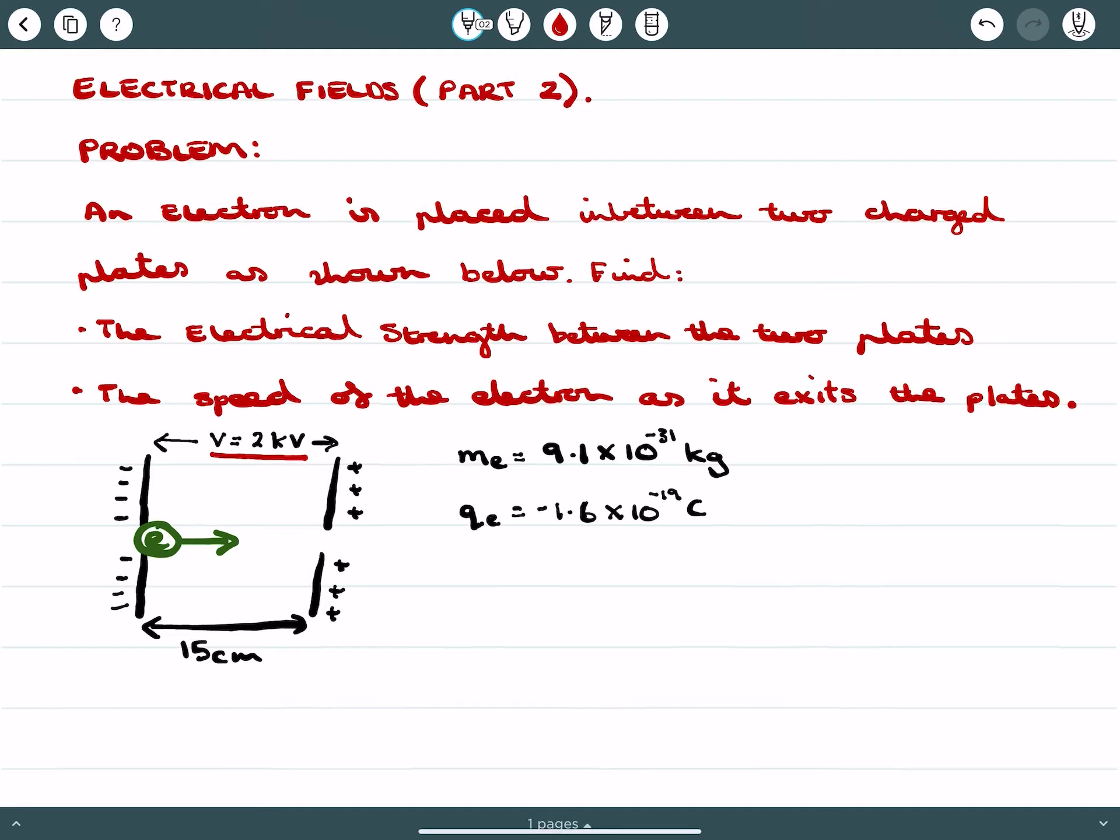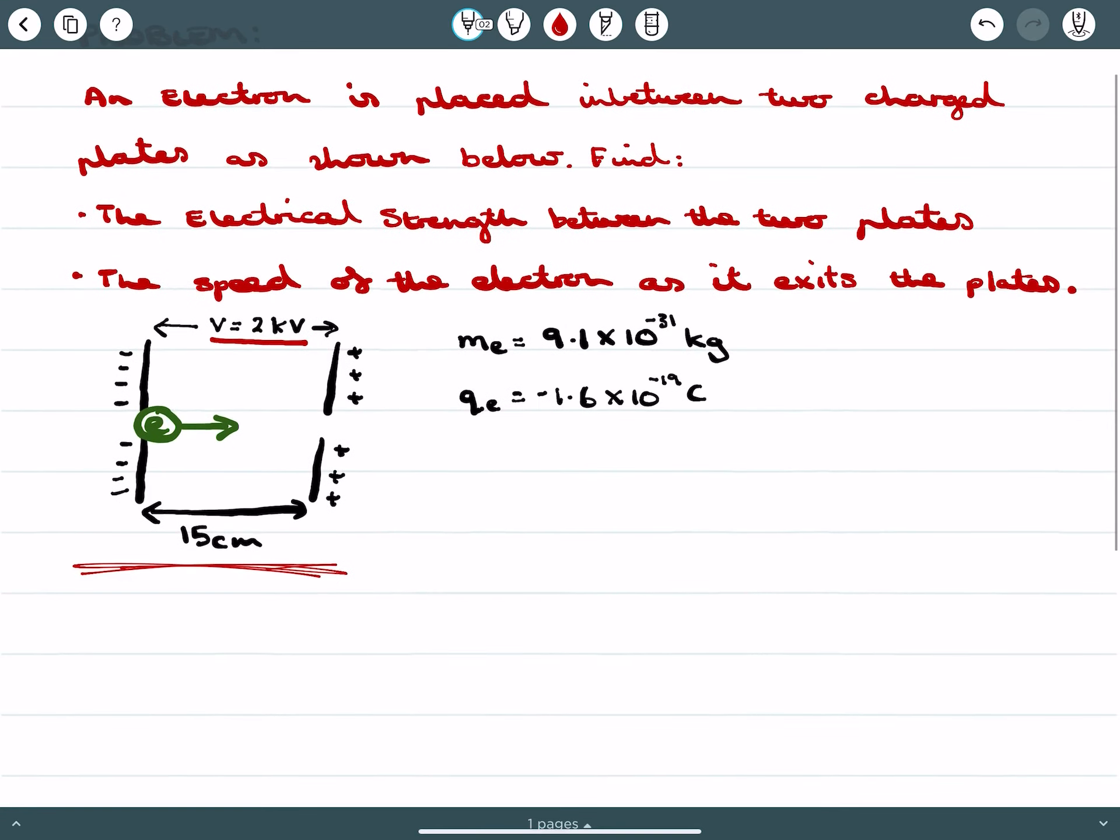And I'm going to try to cover off what happens with a particle when it enters a uniform electrical field, and I'm going to use a problem to do so. So the problem reads this: An electron is placed in between two charge plates as shown below. And you are to find the electrical strength between the two plates and the speed of the electron as it exits the plates.